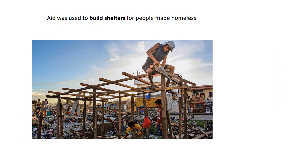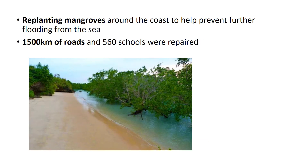Longer term, this aid was used to build shelters for people made homeless, and very slowly people in the Philippines were able to rebuild their lives. In planning for future typhoon events, they are spending a lot of time and effort replanting mangroves along the coast — a mangrove is a plant that can grow in salt water and acts as a natural coastal defence. Many of the roads and 560 schools have also been repaired.